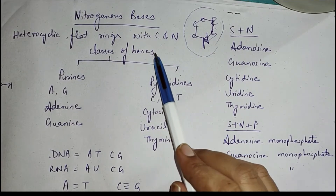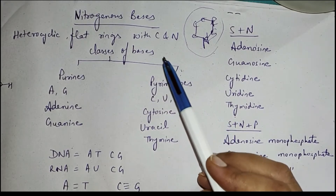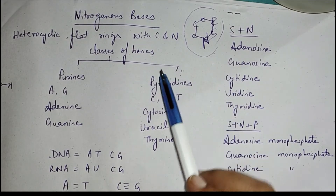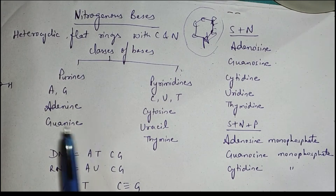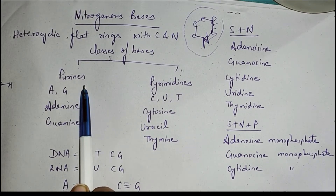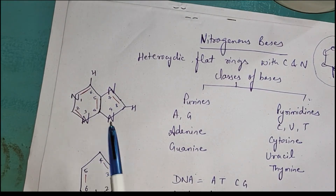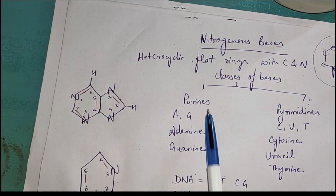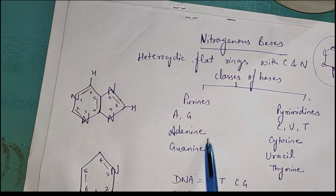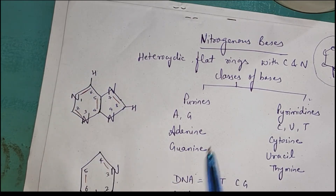The nitrogenous bases found in DNA and RNA are also called nucleobases. They belong to two classes: purines and pyrimidines. Purines are a group of aromatic compounds with a double-ringed basic structure, and the purines are adenine and guanine. Adenine and guanine have a basic structure similar to purine but somewhat modified in both cases.